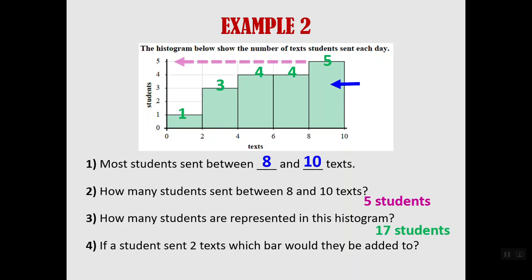Last question. If a student sent 2 texts, which bar would they be added to? Well, 2 is right there on the border. But we need to remember that the 2 always goes with the one that comes after. If it's on the border, it goes with the bar that comes after. So it would be added into that 2 to 4 bar.